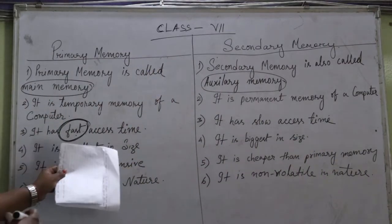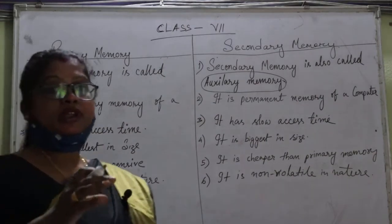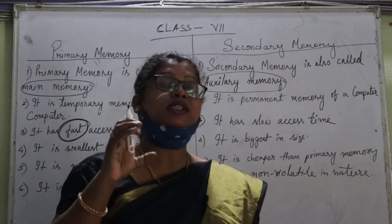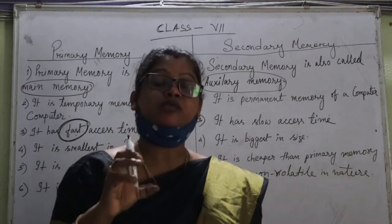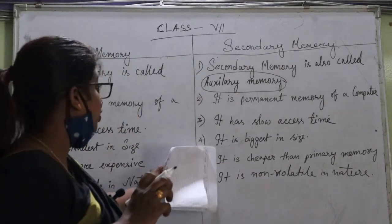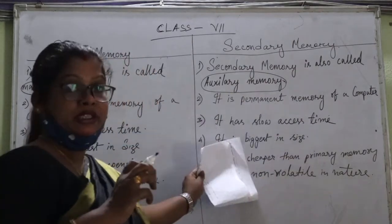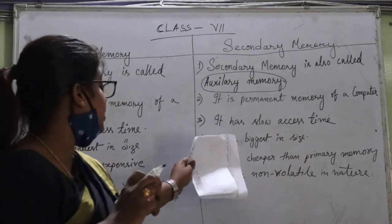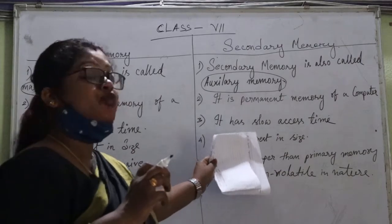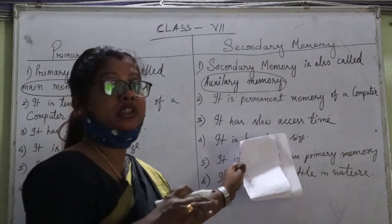Number four point: primary memory is smallest in size — its storage capacity size is small. But secondary memory is biggest in size; its storage capacity is bigger.